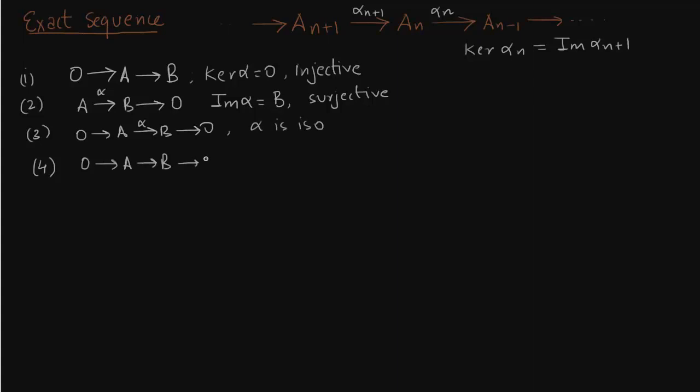And if we have a sequence like this where alpha is a map from A to B and beta is a map from B to C, then alpha is injective and beta is surjective. So we often will write this map as 0 to A to B and C is B over A as a quotient map. So first map is injective and the second map is a quotient map or a projection map.